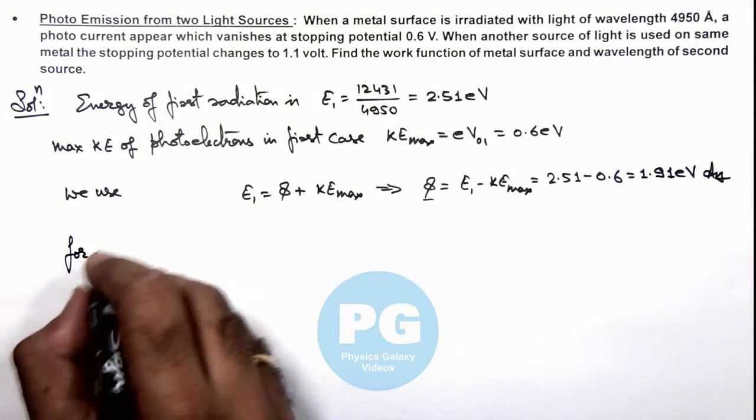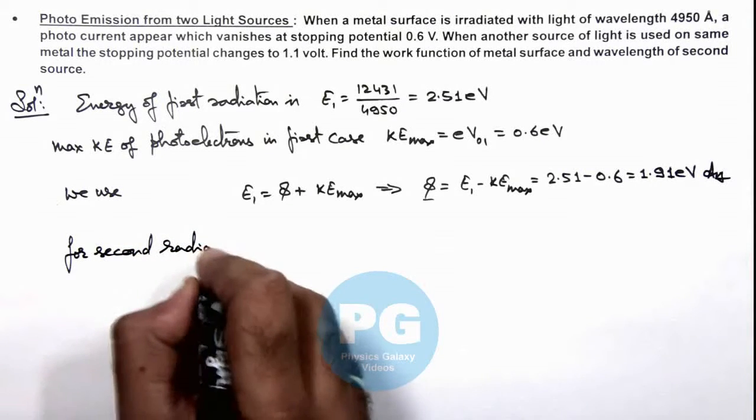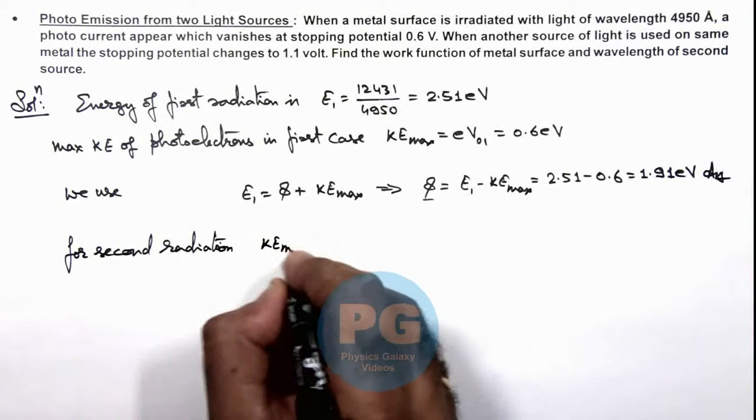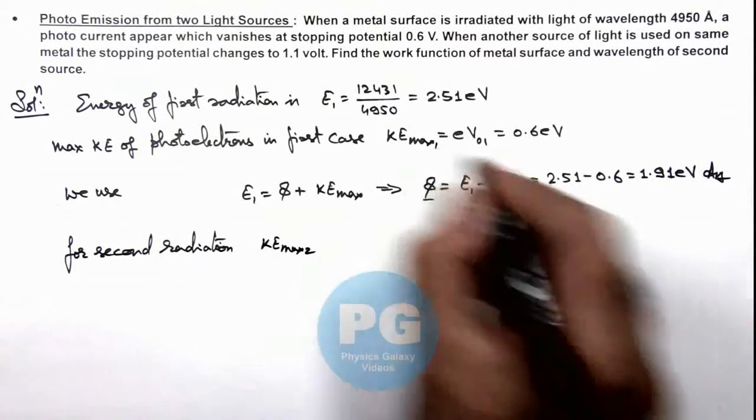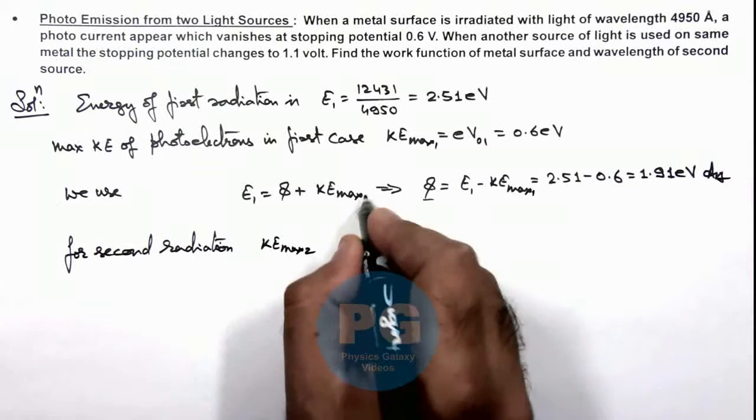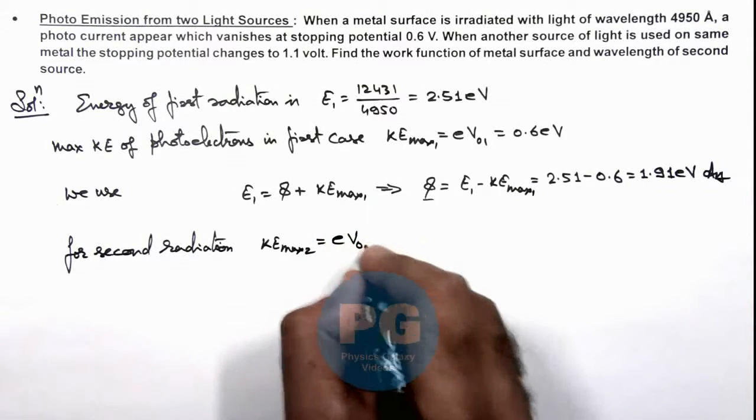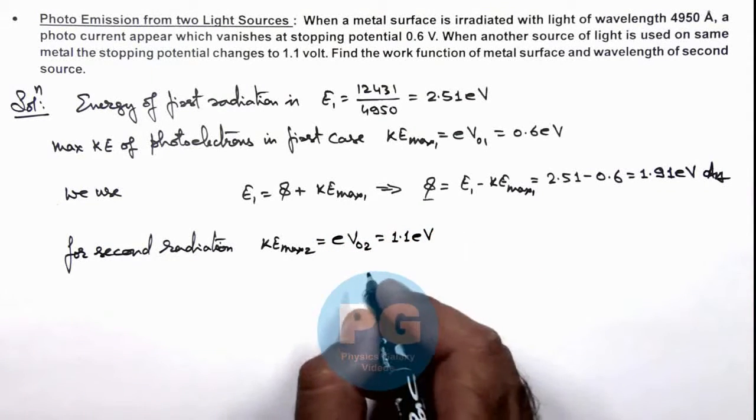For the second radiation, the maximum kinetic energy can be given as KE_max₂, which we can write as eV₀₂, which is 1.1 electron volts.